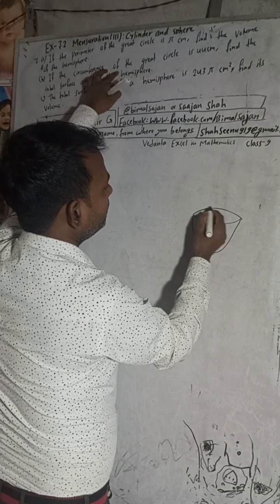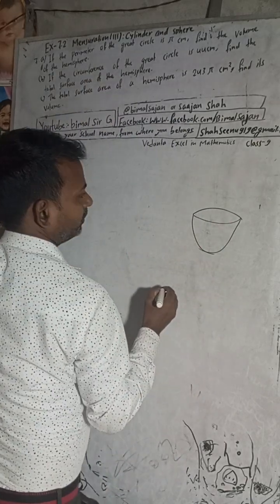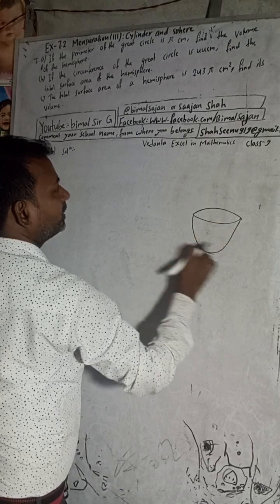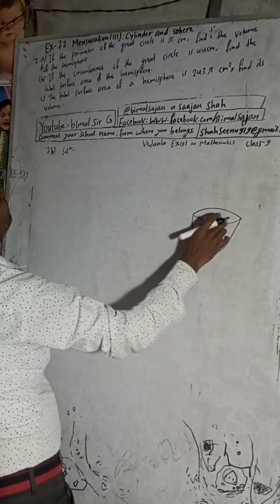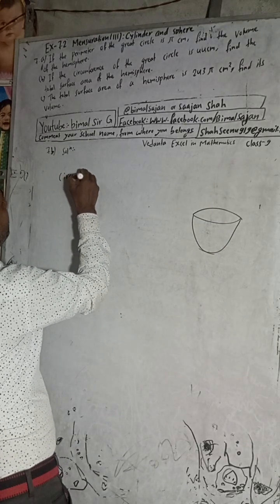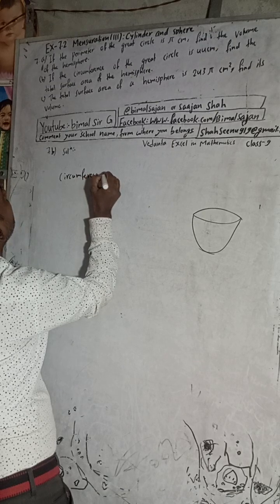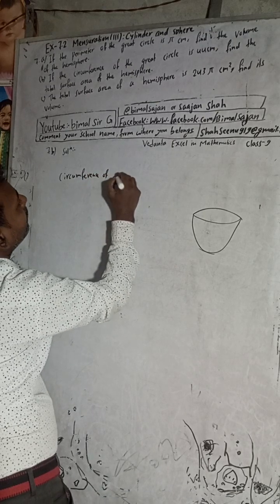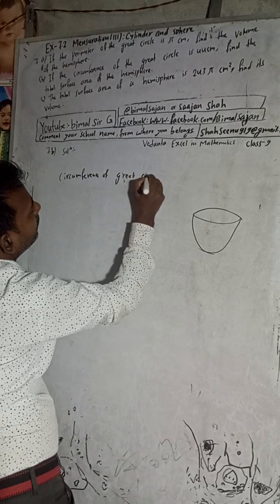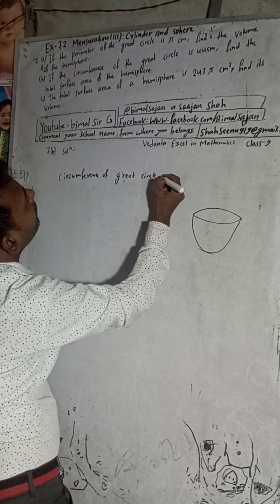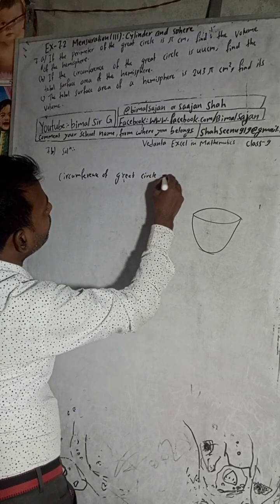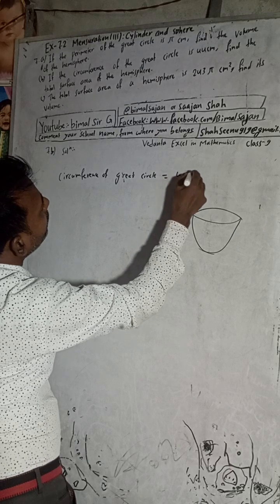The circumference of the great circle — this is the great circle, the bigger circle. If you cut from the top, you get a smaller circle, and the center gives the greater circle. So the circumference of the great circle is equal to 44 cm.